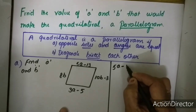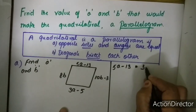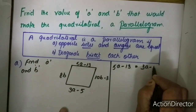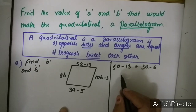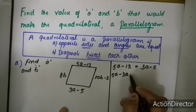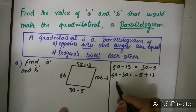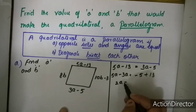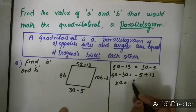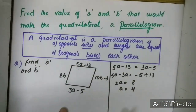So, 5A minus 13 is equal to 3A minus 5. Bringing 3A to the other side: 5A minus 3A is equal to minus 5 plus 13, or 2A is equal to 8, or A is equal to 4.